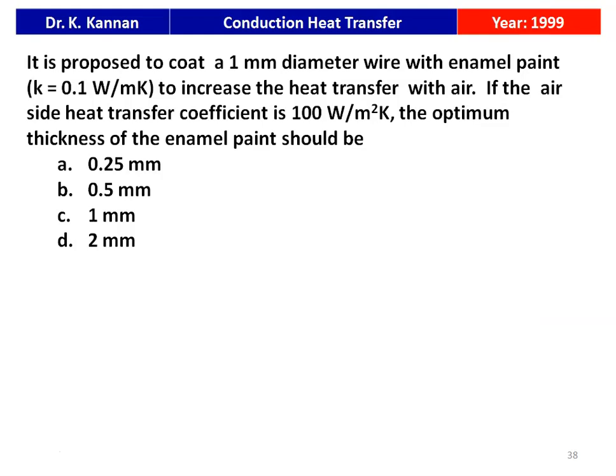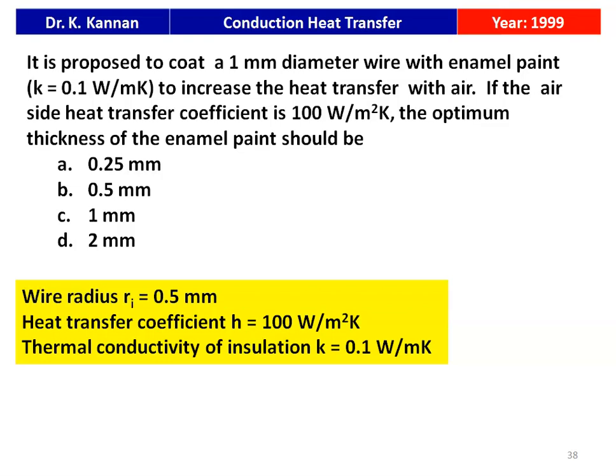The next question is from the 1999 question paper. It is proposed to coat a 1 millimeter diameter wire with enamel paint of thermal conductivity 0.1 W/mK to increase heat transfer with air. If the air-side heat transfer coefficient is 100 W/m²K, the optimum thickness of the enamel paint should be — options: 0.25 mm, 0.5 mm, 1 mm, or 2 mm. We have to calculate the critical thickness of insulation.